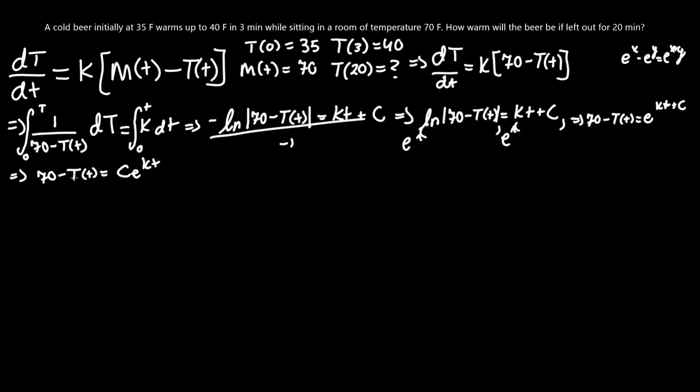Now let's reorganize this to isolate T(t). If we move T(t) to the right side and c e^(kt) to the left side, we get T(t) equals 70 minus c e^(kt). Again, you could absorb the minus, but it doesn't really matter in this case. Now that we have our general formula, we can actually start solving for the values of c and k given these initial conditions. The easiest one is to find c by having T(0) equals 35.